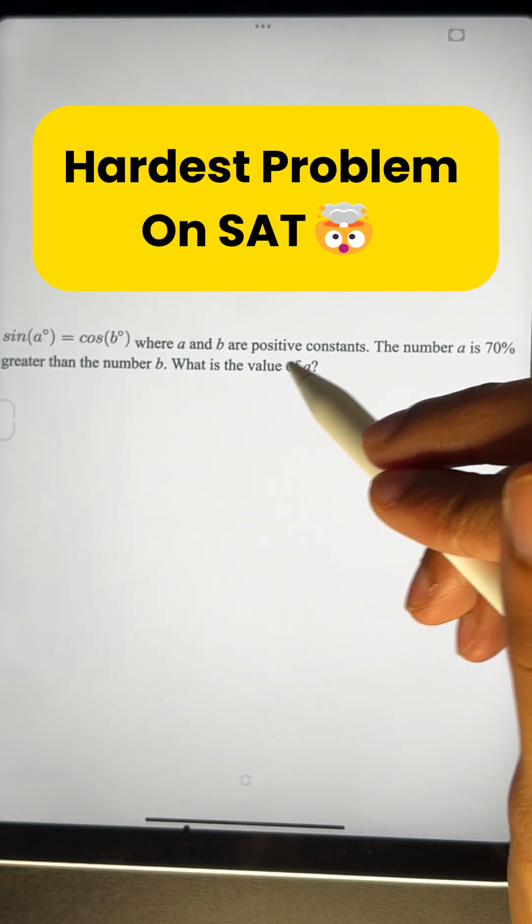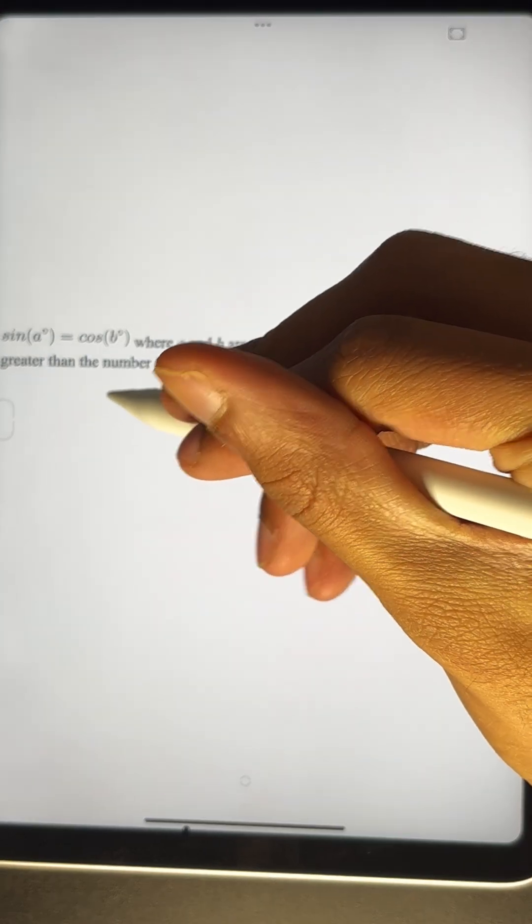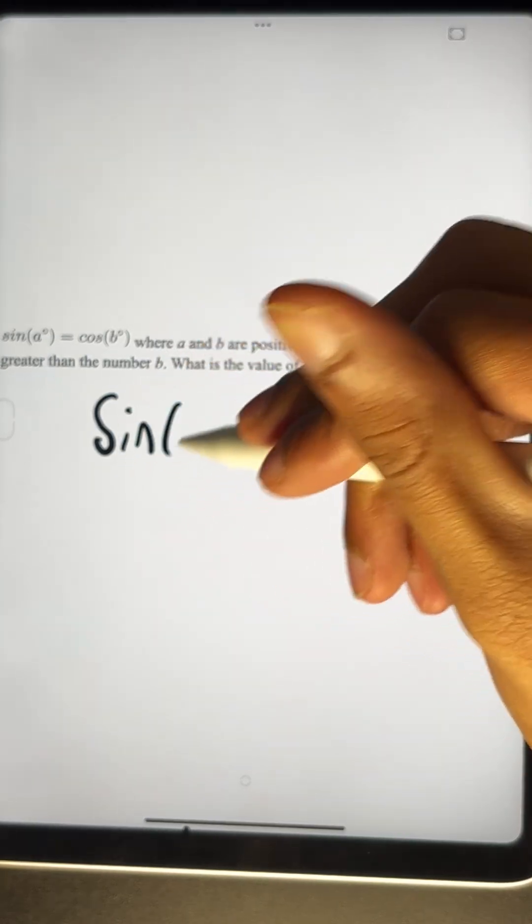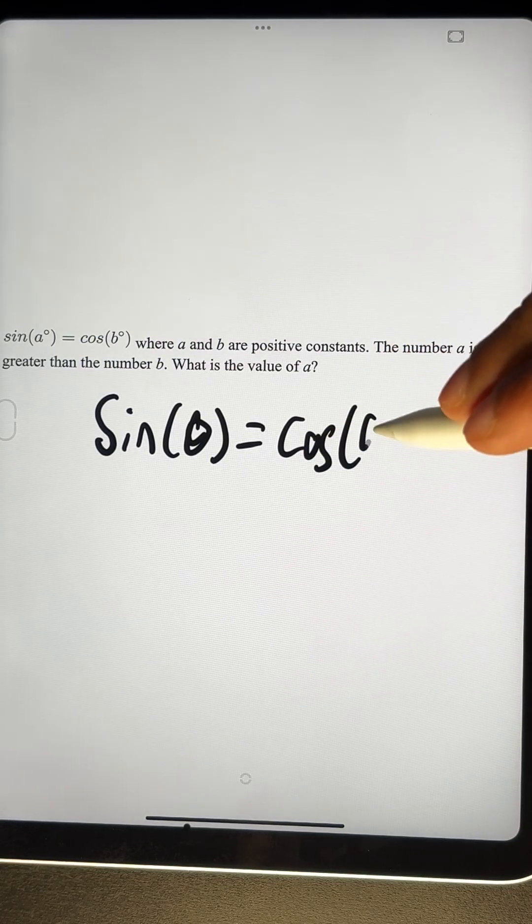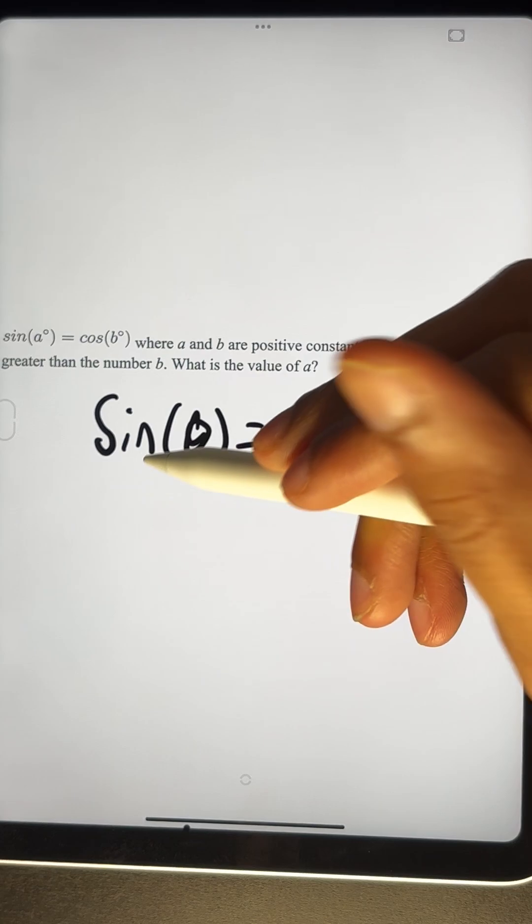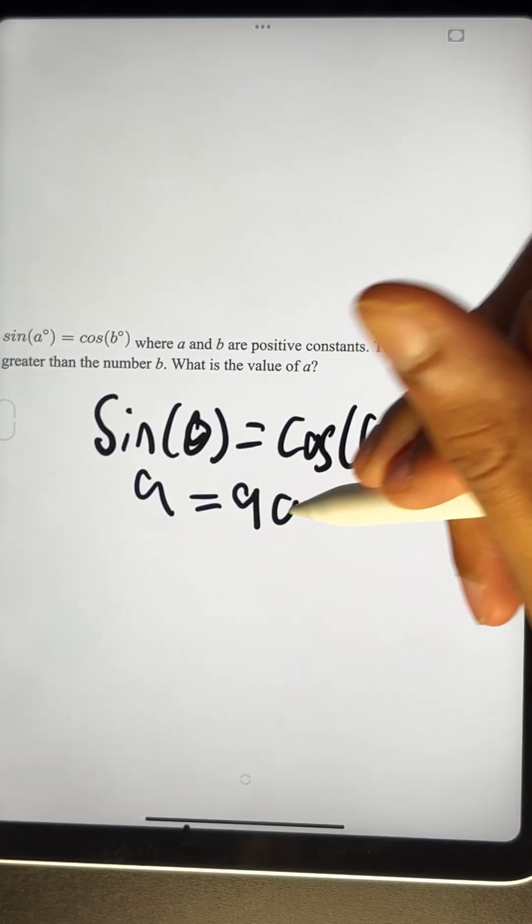This SAT problem seems hard, but actually is really simple. OK, so first we need to know the identity sine theta is going to be equal to cosine of 90 minus theta. So knowing this, A is going to be equal to 90 minus B.